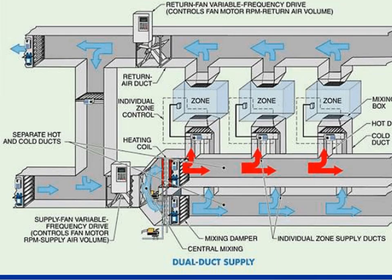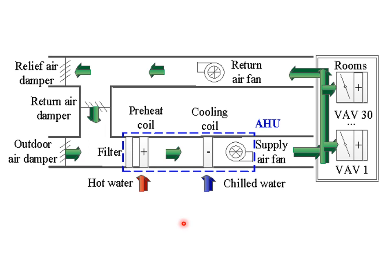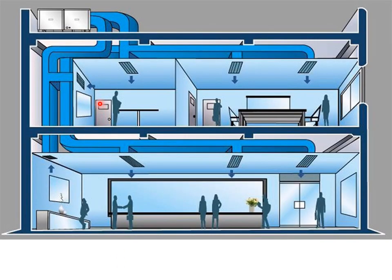Nowadays there is also a concept of a dual duct HVAC system in which hot air and cold air are supplied through different ducts to different zones of a building. An AHU comprises filters, preheating coil or heating coil, cooling coil, mixing chamber, and supply air fan. In low rise buildings, AHUs can be mounted on the terrace; however, necessary cutouts and shafts must be provided to facilitate layout of HVAC ducts across the floors.